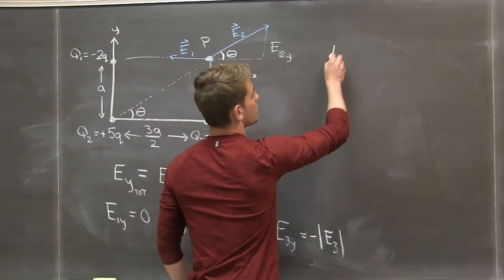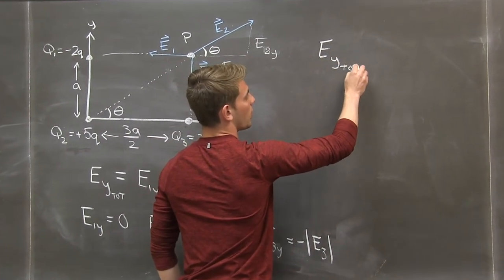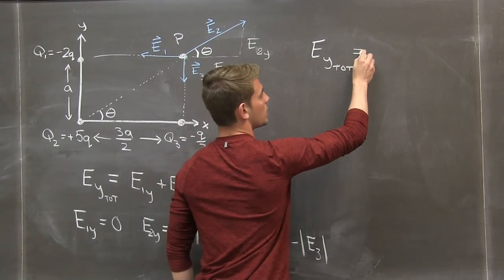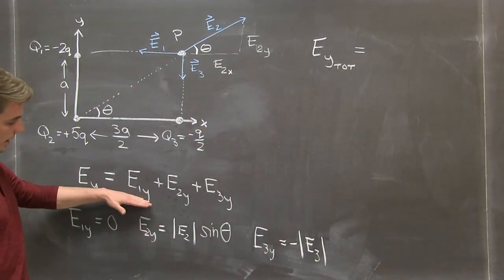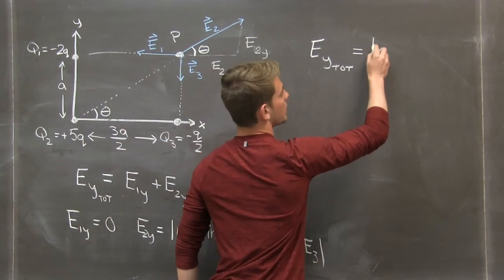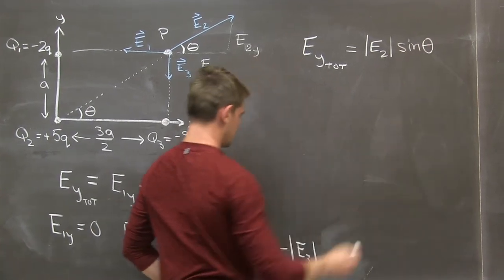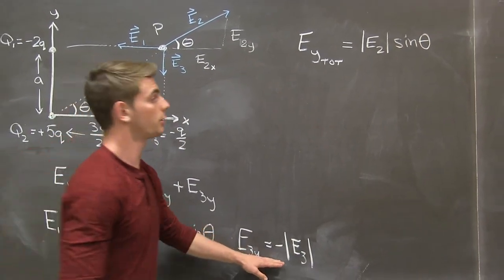Now, this brings us to the total y component of the electric field is just zero plus e2 sine theta minus magnitude of e3.